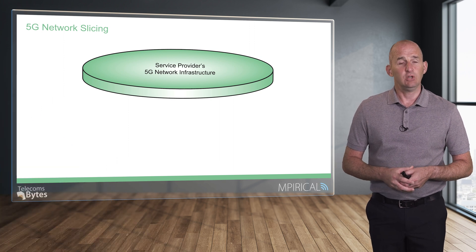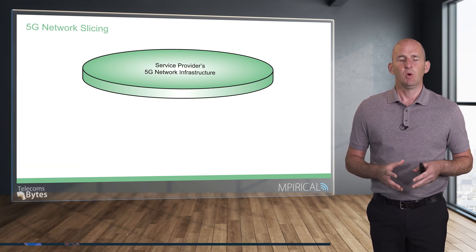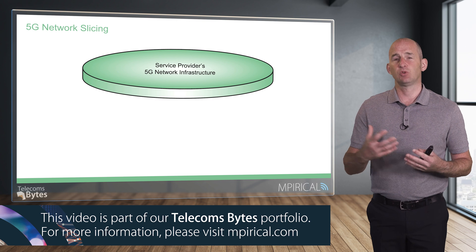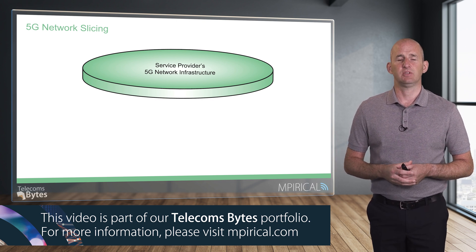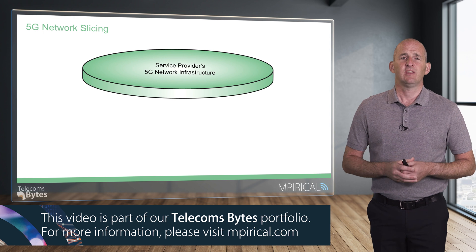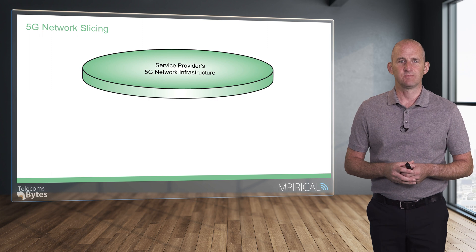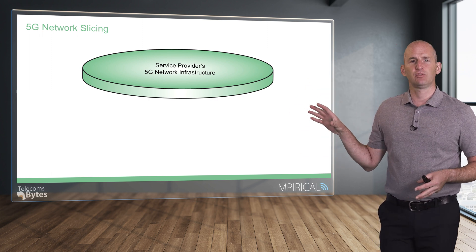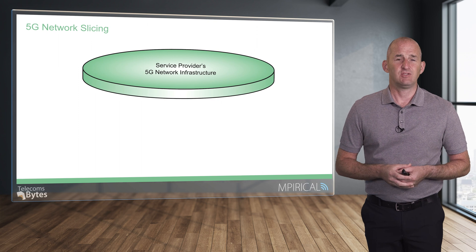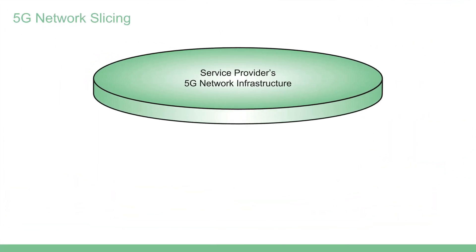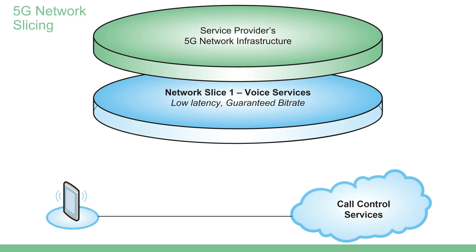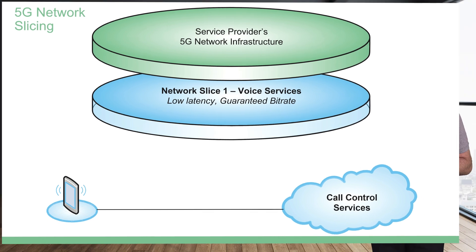Network slicing is a new concept for cellular networks. We started to see attempts towards network slicing in 4G, but it wasn't until 5G that we really saw end-to-end network slicing come to the fore. On the diagram we've got the physical infrastructure that would be the 5G service provider's network, and a network slice is essentially an overlay onto that network — a virtual instance of a 5G network using the underlying physical 5G infrastructure.